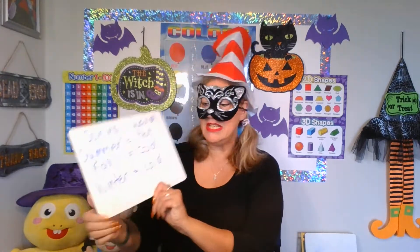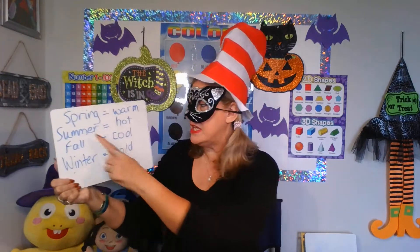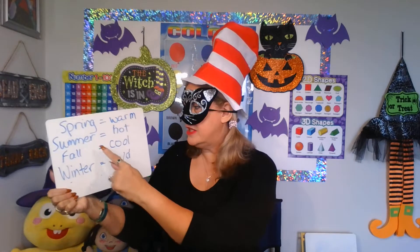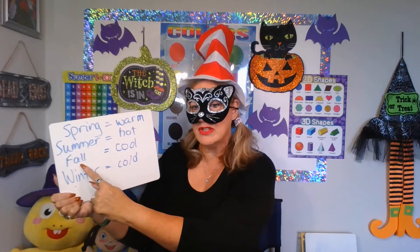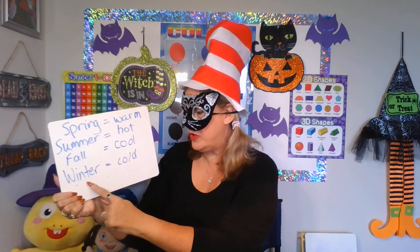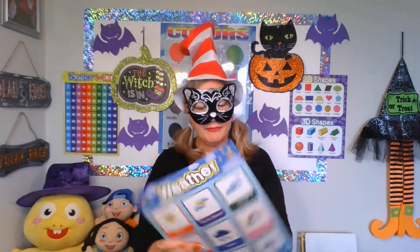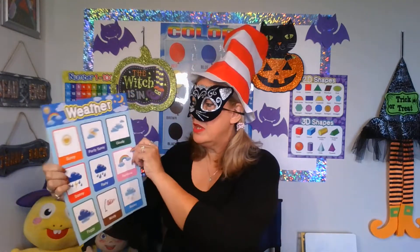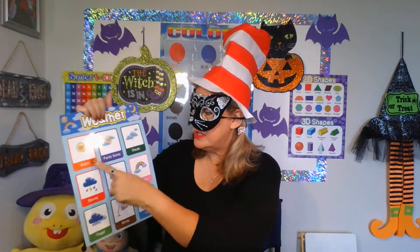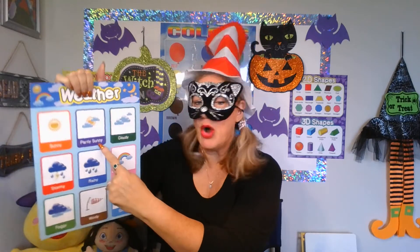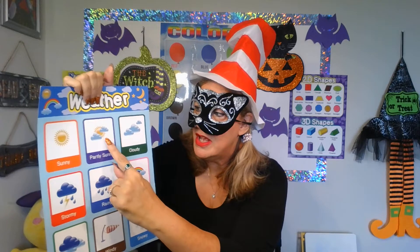During these seasons there are different types of weather. The spring season is warm, the summer season is hot, the fall season is cool, and the winter season is cold. Let's look at the different types of weather that could be in each season. First we have sunny weather, then we have partly sunny weather. If you look at this picture, the sun is out, but the sun is covered partially by clouds.